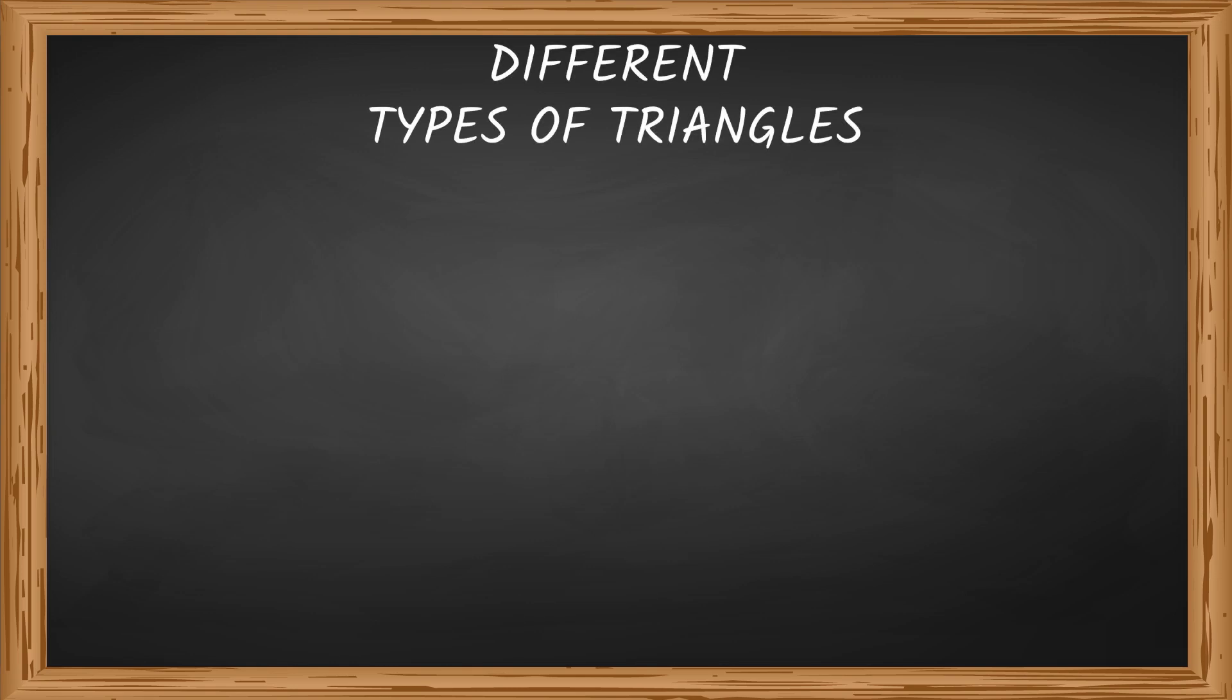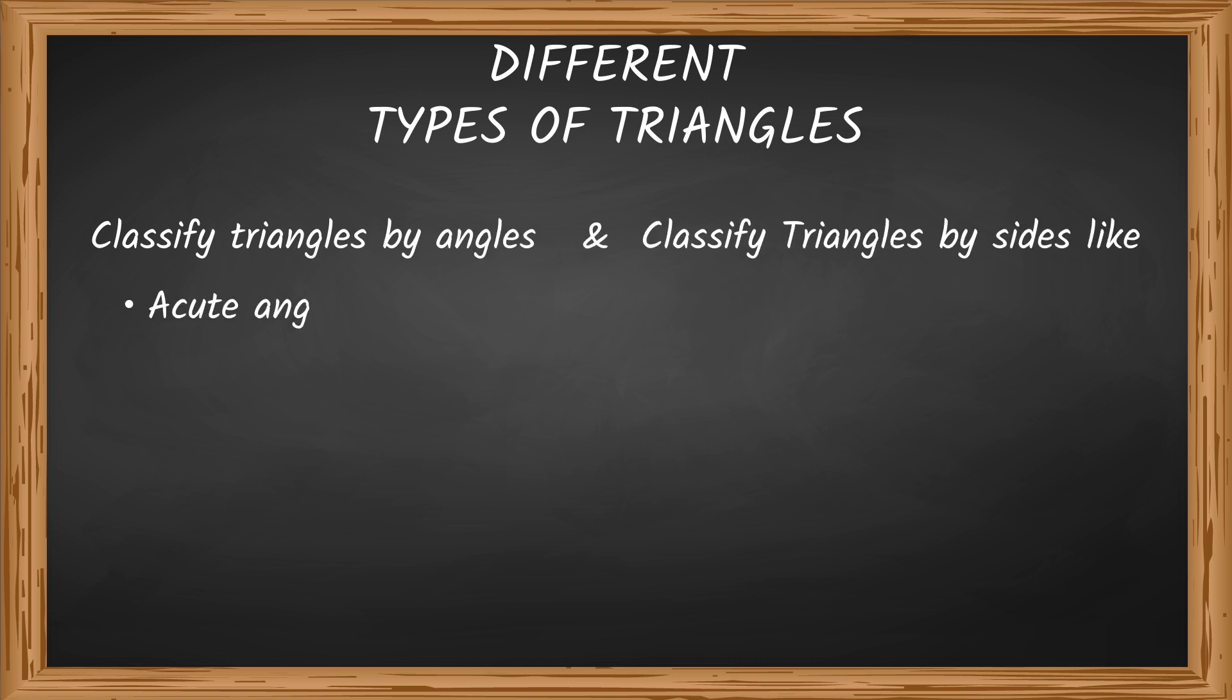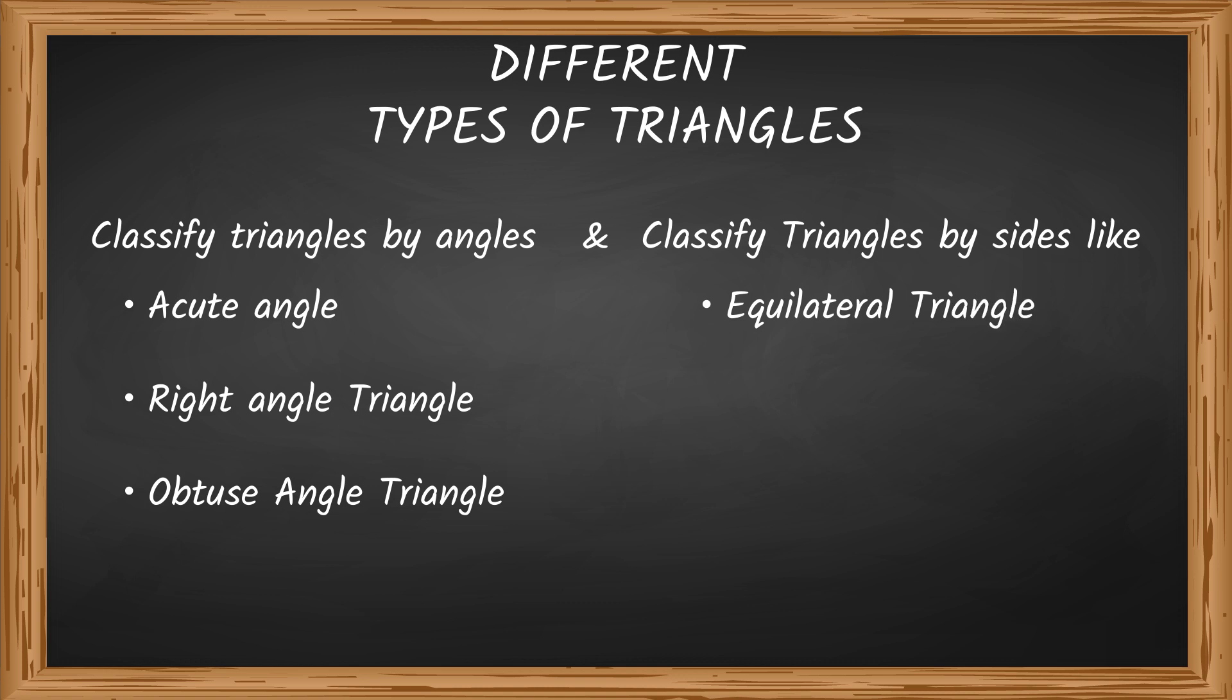By the end of this video, you'll be able to identify and classify triangles by angles and classify triangles by sides, like acute angle, right angle triangle, obtuse angle triangle, equilateral triangle, isosceles triangle, and scalene triangle. Stick around and watch till the end.